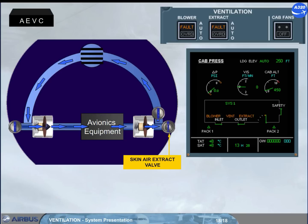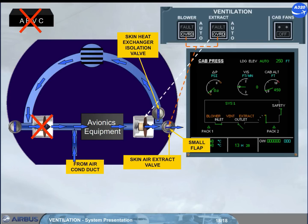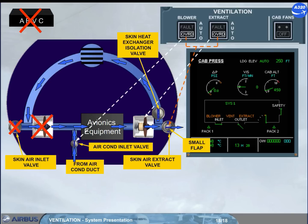On ground, in case of an AEVC failure, both fault lights come on. Note: as the control of the skin air inlet valve is lost, its position will be the one before the fault occurs.